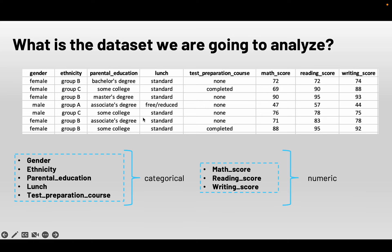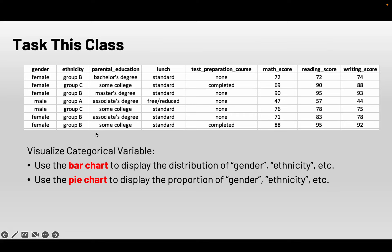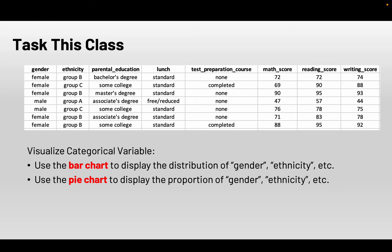The task is to analyze this dataset. First, we want to analyze some categorical variables, including from gender all the way to the test preparation course. In order to visualize those categorical variables, we can use a bar chart and a pie chart. For a bar chart, we use a coordinate system with an x-axis and a y-axis — the x-axis represents the labels and the y-axis represents the counts. If we want to focus on the proportion of these labels, such as gender, we can use a pie chart, because each slice of the pie can represent their proportions. Let's go to Python and learn how to create a bar chart and a pie chart.